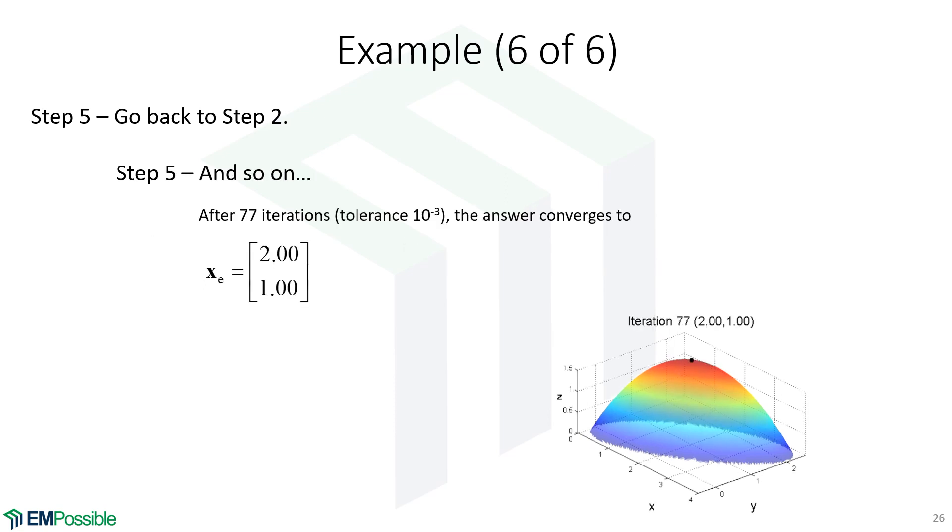We will calculate the gradient, we'll move along the gradient, calculate the gradient, move along the gradient and keep doing that until the gradient is sufficiently small. I set a tolerance for the gradient magnitude to be 10 to the minus three. And when I do that in 77 iterations, I arrive right around the extrema. I'm pretty close to the top within 10 to the minus three. And this is what I got for the extrema, an x value of 2 and a y value of 1.